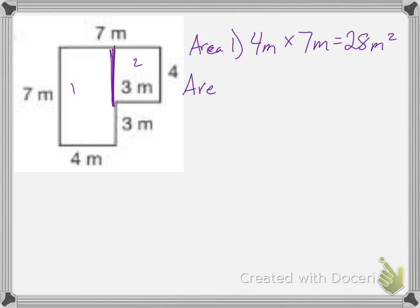And for area 2, we're going to multiply 3 meters times 4 meters, which equals 12 meters squared.